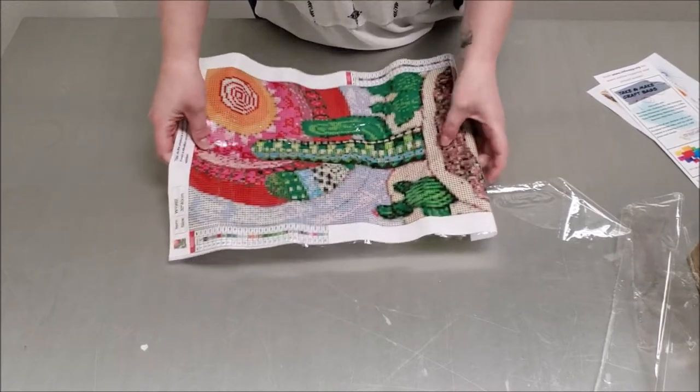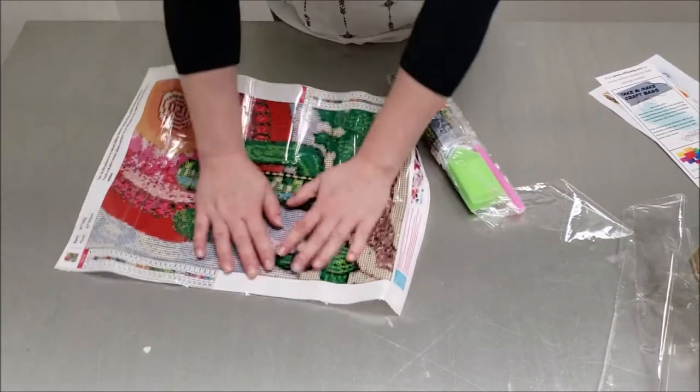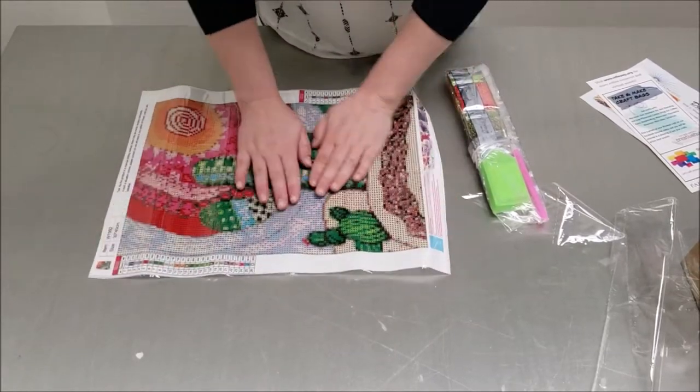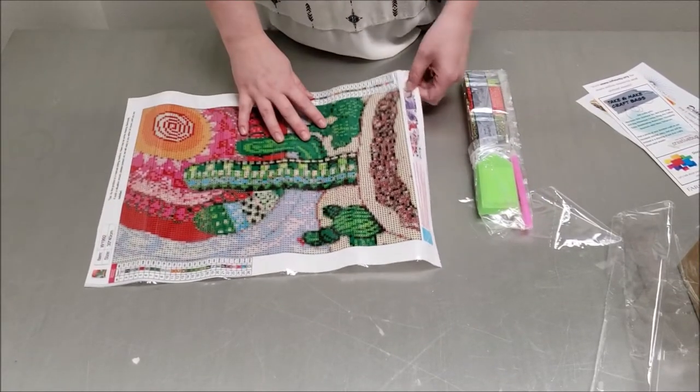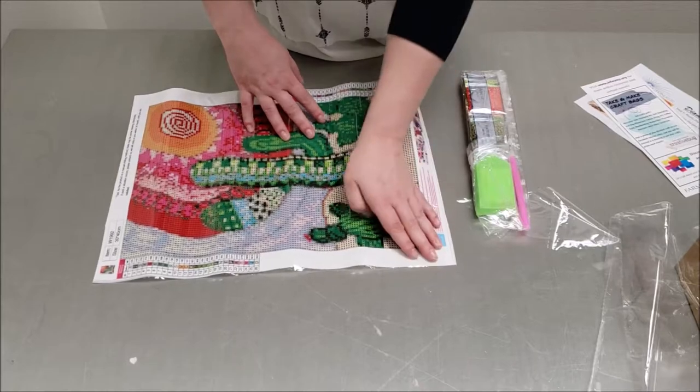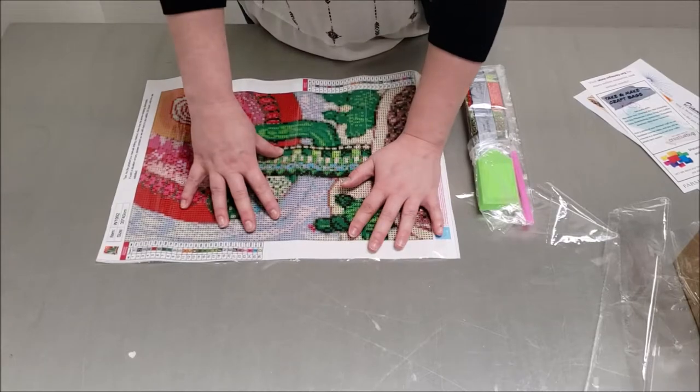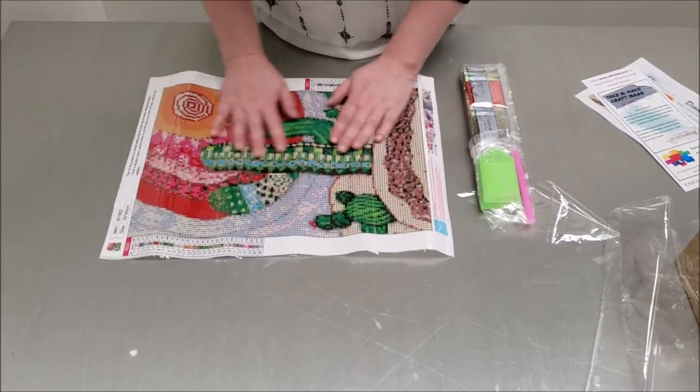So here is our canvas. It starts off obviously rolled up, so you want to kind of flatten it. What I do, because I do this a lot at home, I actually lay some books flat on it and weigh it down so that it flattens out a little better.